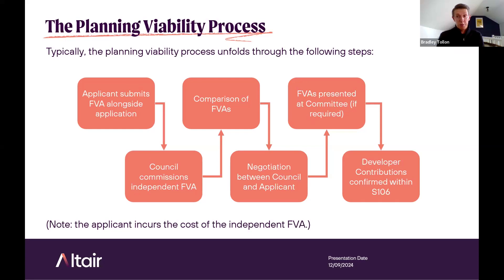An FVA is generally submitted as part of a broader planning application for consideration by the local planning authority. Applications should seek to engage with the LPA as early as possible if they are concerned the scheme will not be able to deliver the required level of affordable housing. The FVA is then reviewed once submitted by an independent consultant to assess whether the approach is in line with policy and assumptions are reflective of market conditions — paid for by the applicant, not the local authority. A process of negotiation then takes place, leading to an agreement on the final level of contribution. This can be presented at planning committee and, assuming grant of permission, the agreed level of affordable housing is secured via a Section 106 agreement.